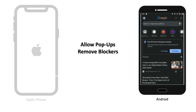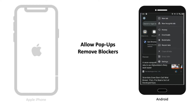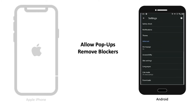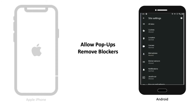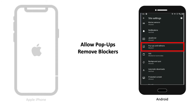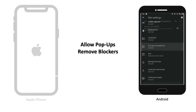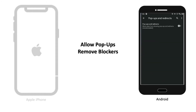For Android, open the Chrome app, tap More — the three vertical dots at the top right — select Settings, then Site Settings, then Pop-ups and Redirect. Turn on by tapping the slider by Pop-ups and Redirect.